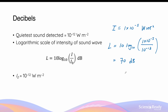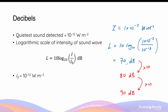Because decibels is expressed on a logarithmic scale, an intensity of 80 decibels means the intensity is actually 10 times greater than 70 decibels. Similarly, 90 decibels is another 10 times greater than 80 decibels, which is 100 times louder than 70 decibels. So decibels is not a linear scale — a difference of 10 decibels is equivalent to a 10 times change in the actual intensity of sound.